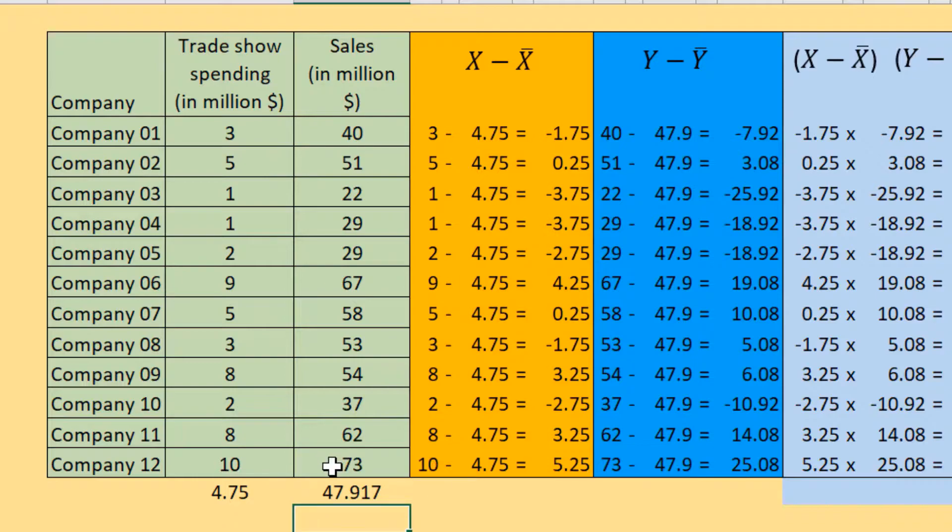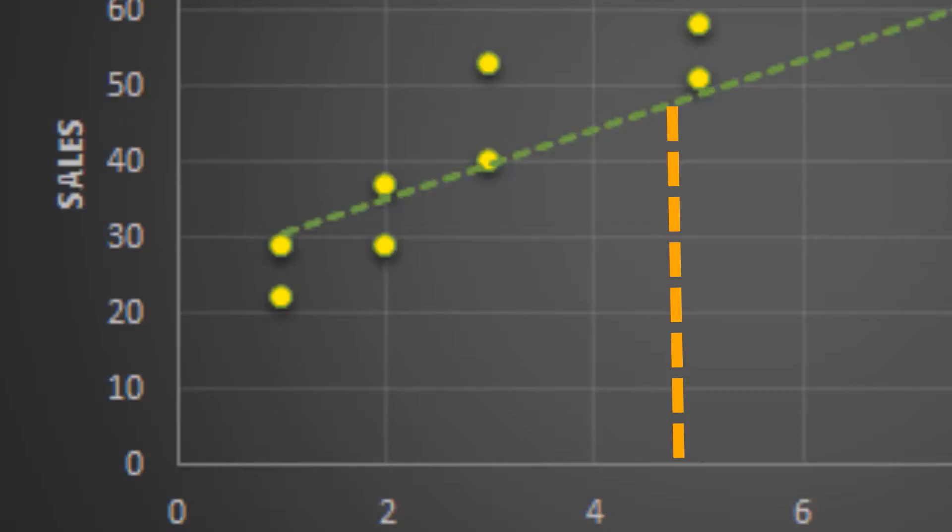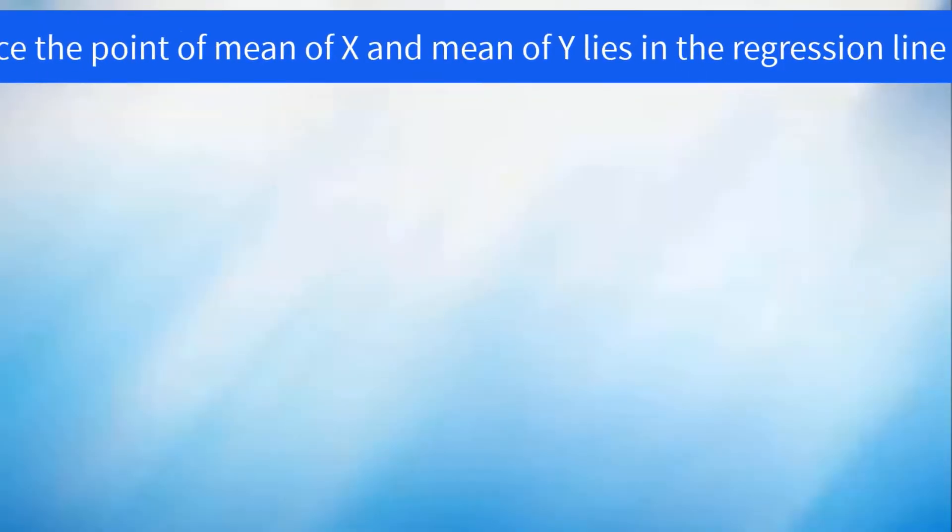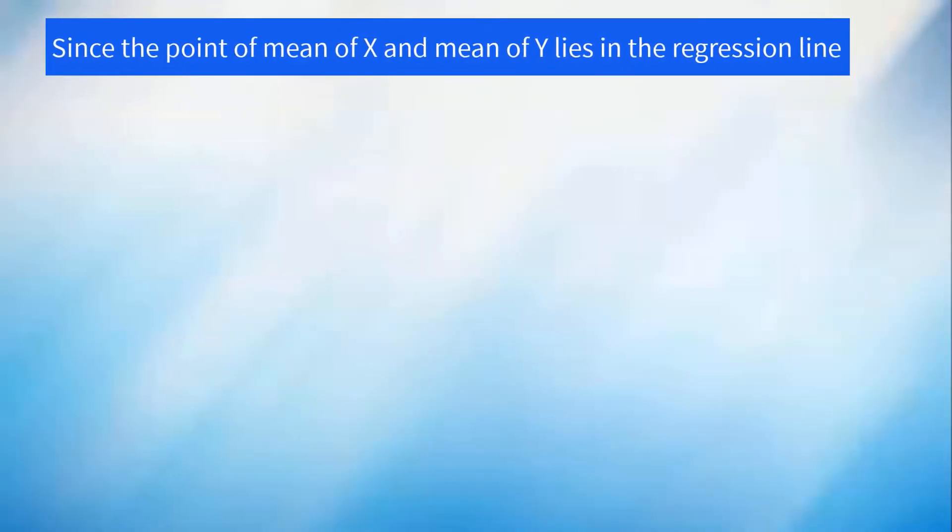We will plot them in the scatter plot. Here is x of 4.75 and y of 47.92. The corresponding point will lie on the regression line. Therefore, we can solve the intercept using this formula.